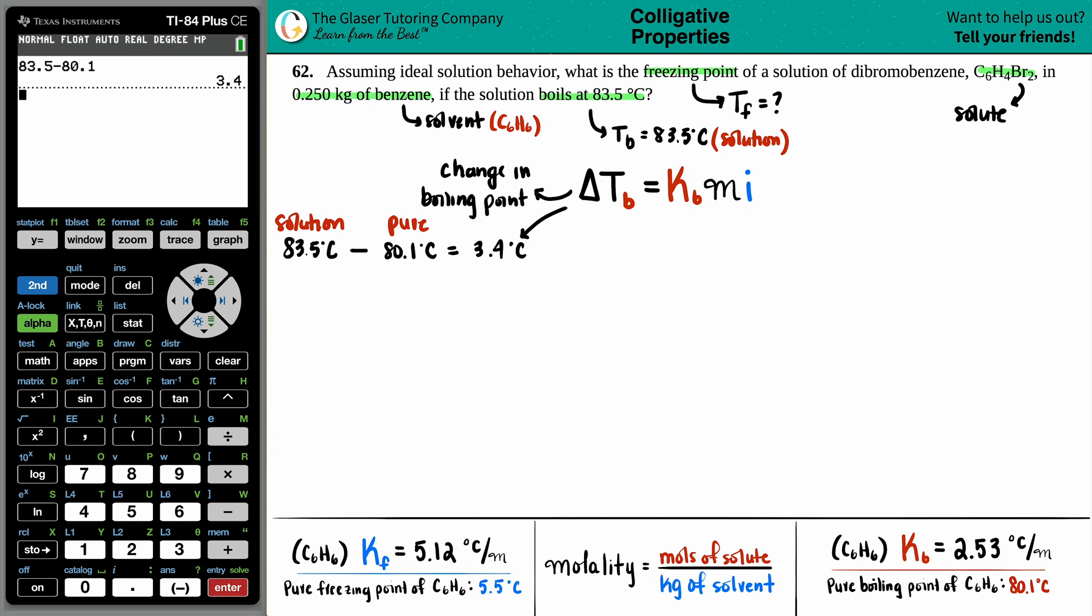Now, delta TB always equals the boiling point elevation constant, that's the KB. And this is solely reliant on the solvent. That's why it's really important to know which one of these two is the solvent. We have to go into the textbook to find out what the KB value is for benzene, because benzene is our solvent. And we get 2.53.